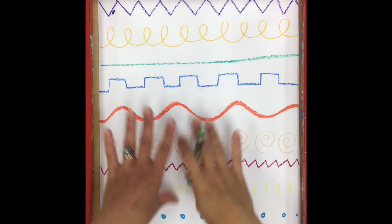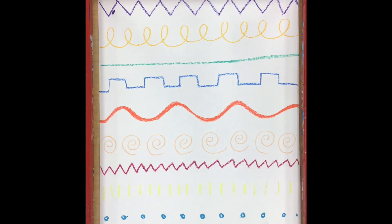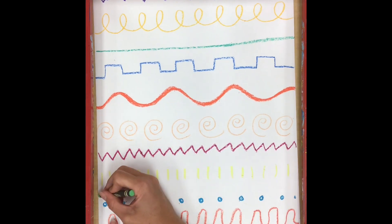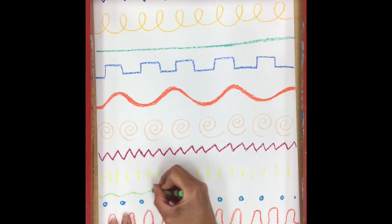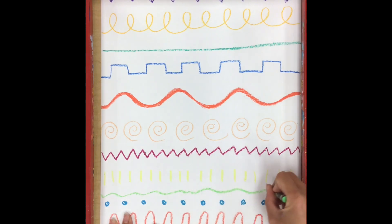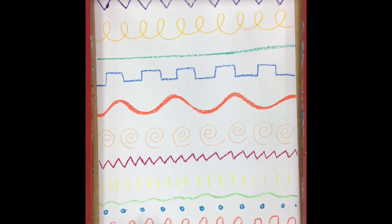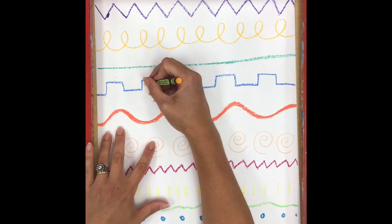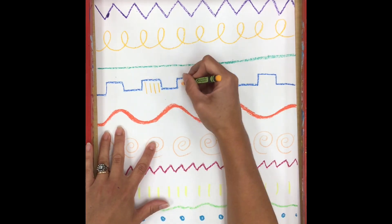When I get to the bottom, I like to go back and see if there's any spaces that maybe need an extra line or two. Like I think this area maybe needs a little green. And maybe this line needs a little something extra. Maybe I'll add some more lines to it.